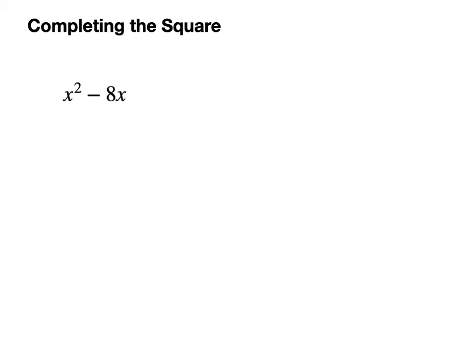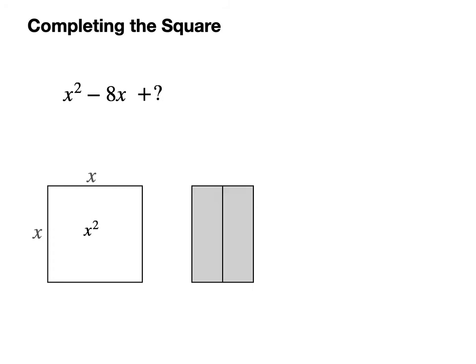As before, here's the x squared. And here's the 8x. And again I'll slice it into two rectangles of 4x each. But of course this time the x term is negative. So these two rectangles must be subtracted rather than added. I'll take them out of the picture here and here.